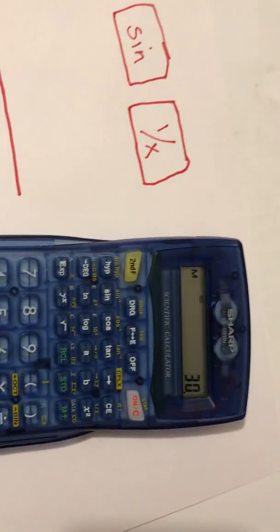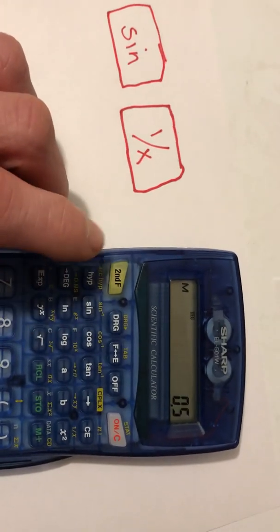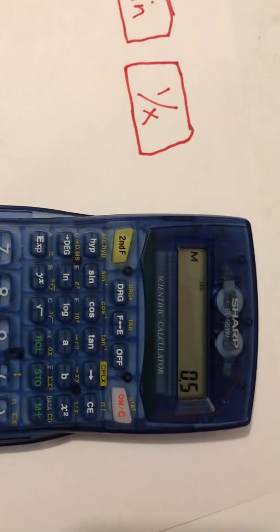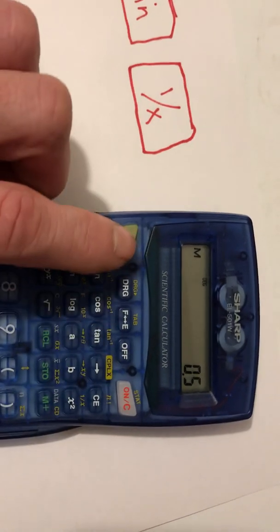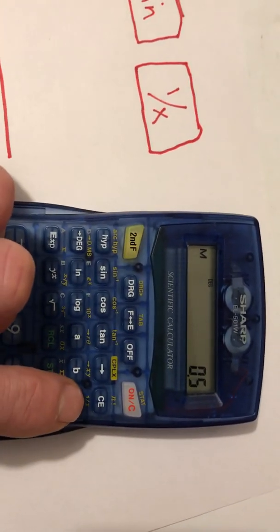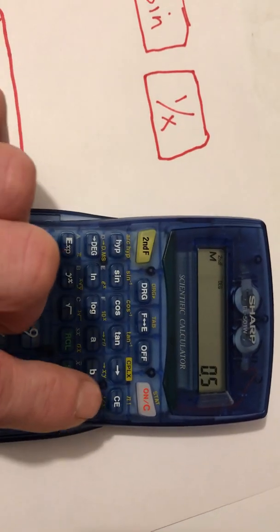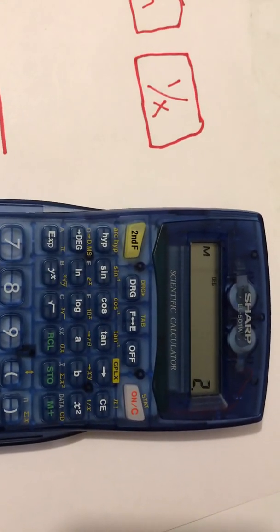and then I'm going to type the sine button. And with the phone, you don't have to hit this second f button that I'm going to hit. You just hit 1 over x, but I have to hit the second f button here because it's in the yellow right here. So, 1 over x, there's the multiplier on a 30 degree offset.